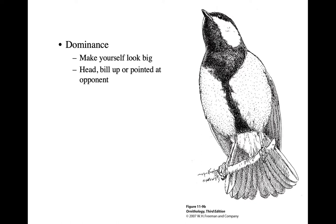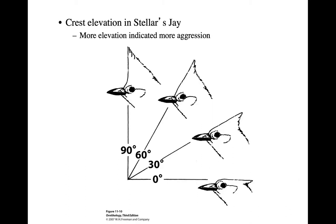Vocalizations are also important here. Dominant individuals often produce harsh vocalizations, while submissive individuals make a whining-like call very similar to the vocalization that nestlings make. In birds with crests, the elevation of the crest can indicate their level of aggression. In Steller's jays, a submissive individual lays the crest flat, while a dominant individual pokes it up high to indicate dominance and potential aggression.